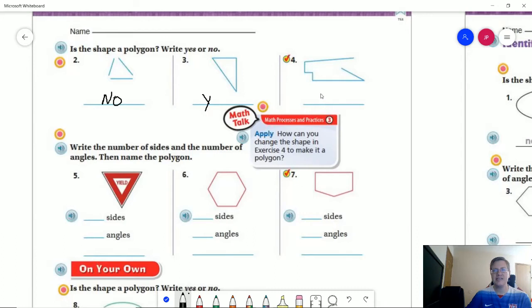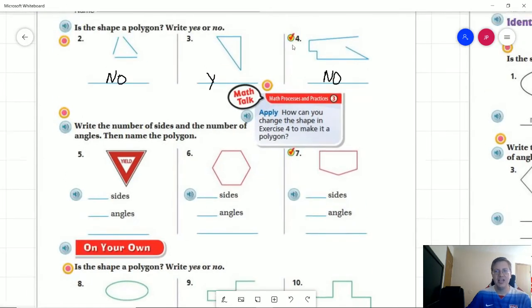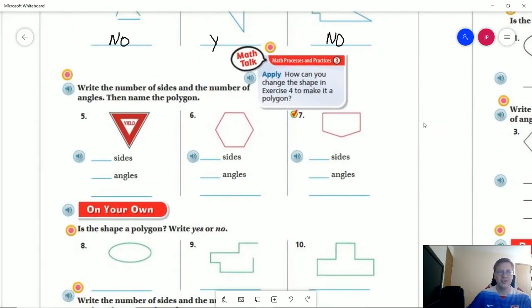Number three would be yes, number four would be no again because we do not have a closed shape. If we had an extra line that extended this way to connect, we'd almost have something that kind of looks like an anvil. But if we had closed this shape we would meet the requirements for it to be a polygon even though it would be a rather unusual looking one.